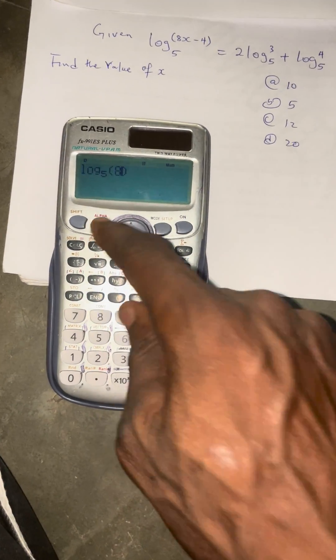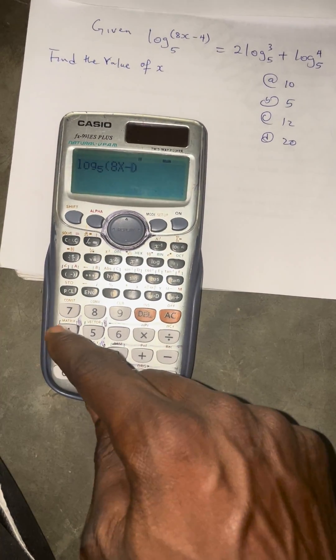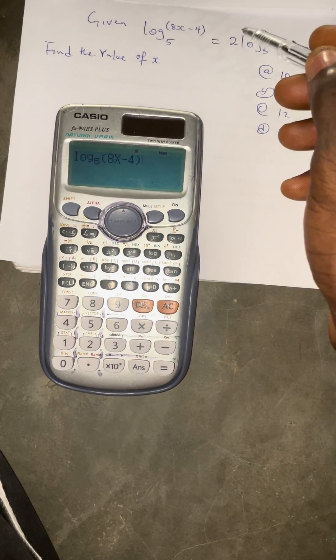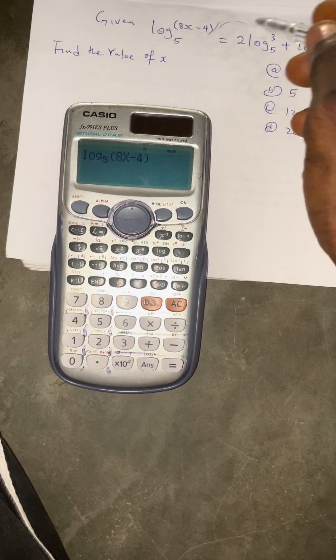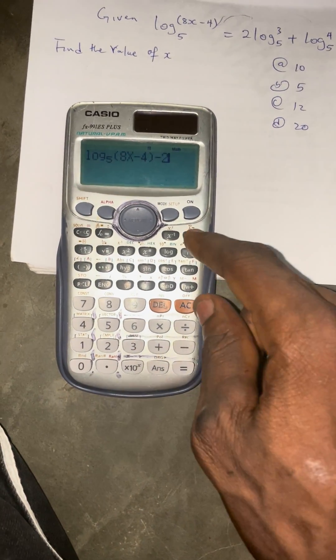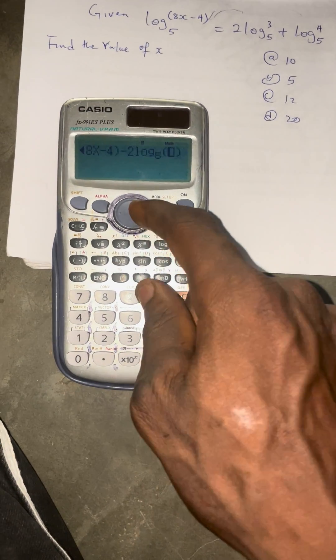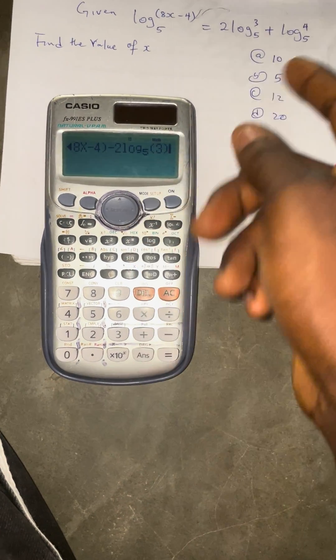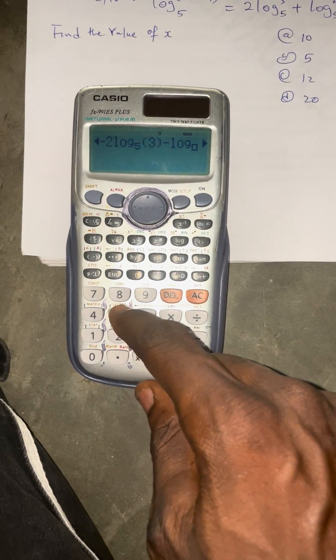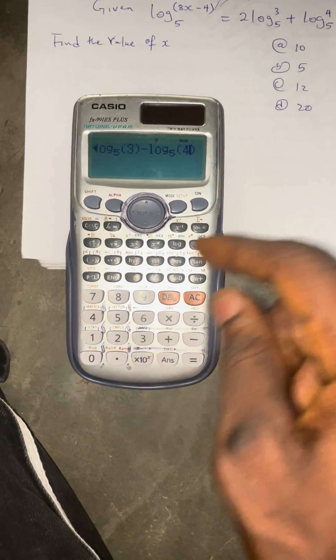Then come inside, you have eight then x minus four. Then come here, you will be taking all the equations. After this equals, take it inside. Now when you take this one inside it becomes minus two, then log you have the five here and the log to be three. Then take the other one inside as well, becomes minus the log of five, then you have four here.